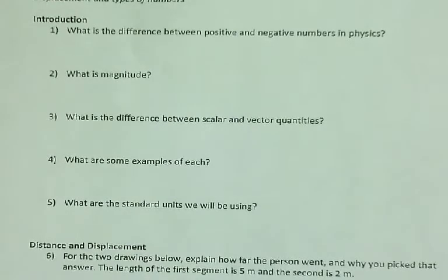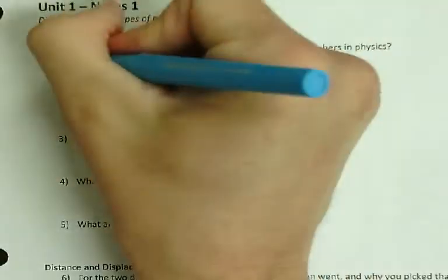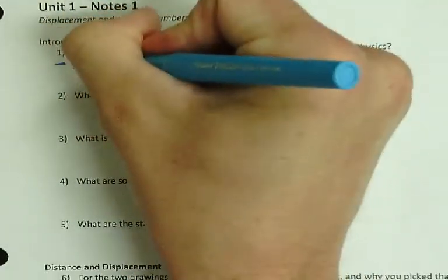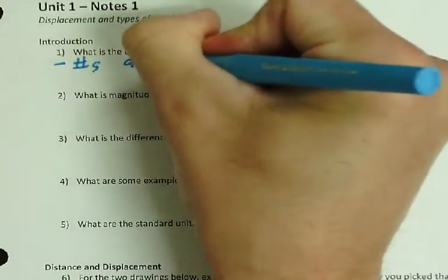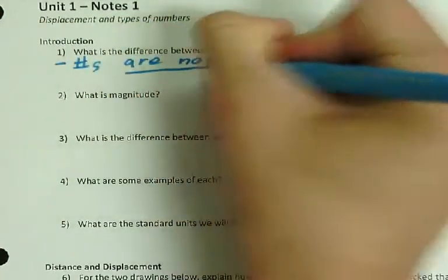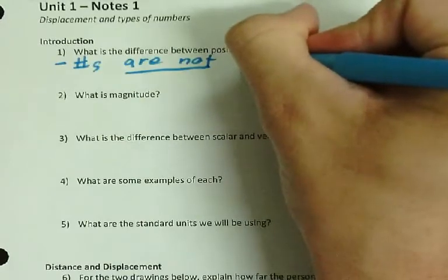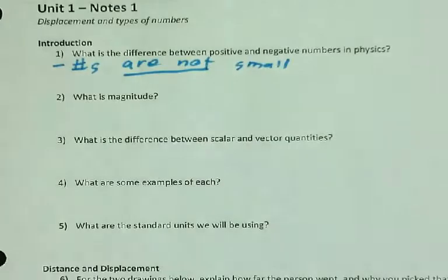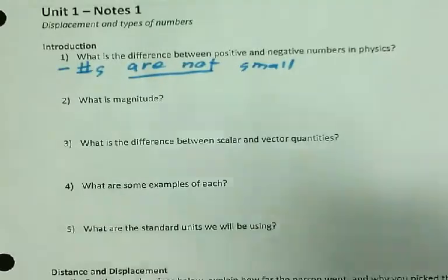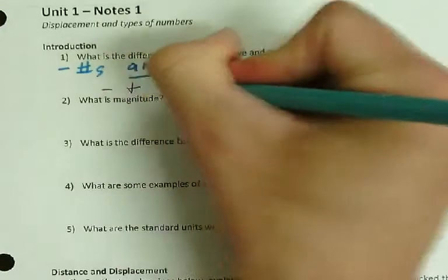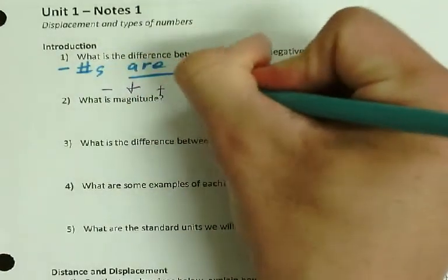That is not true in physics. So negative numbers are not small. Usually we think of negative 100 as a really small number. That is not what negative numbers are in physics. So in physics, what are negative numbers and positive numbers? Negative and positive are directions.